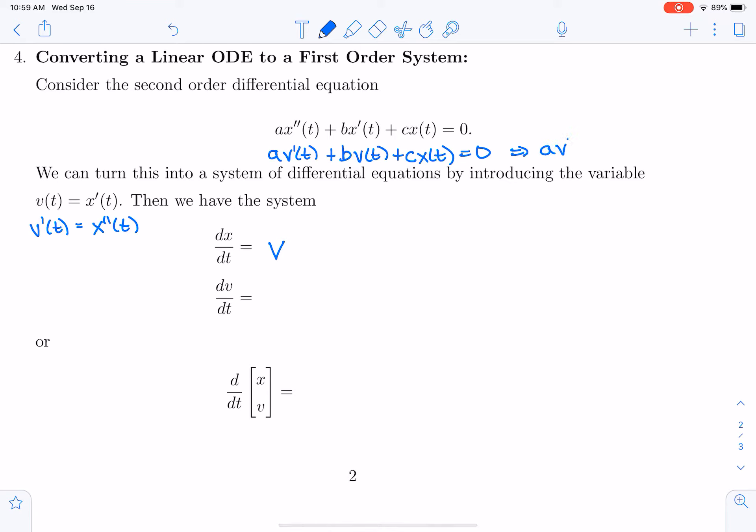A V prime of t is equal to negative B V of t—actually I'm going to put the other one first—minus C x of t minus B V of t. And then finally I can divide by A, so that dV/dt is equal to minus C over A x of t minus B over A V of t.